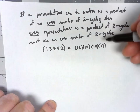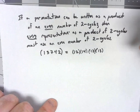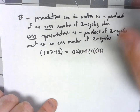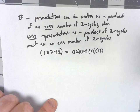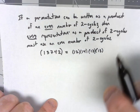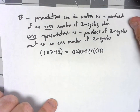Now, I wrote this all up in terms of an even number of two cycles, but it's the exact same thing just replacing even with odd. If it can be written some way as a product of an odd number of two cycles, then every way it can be written as a product of two cycles must use an odd number of two cycles.